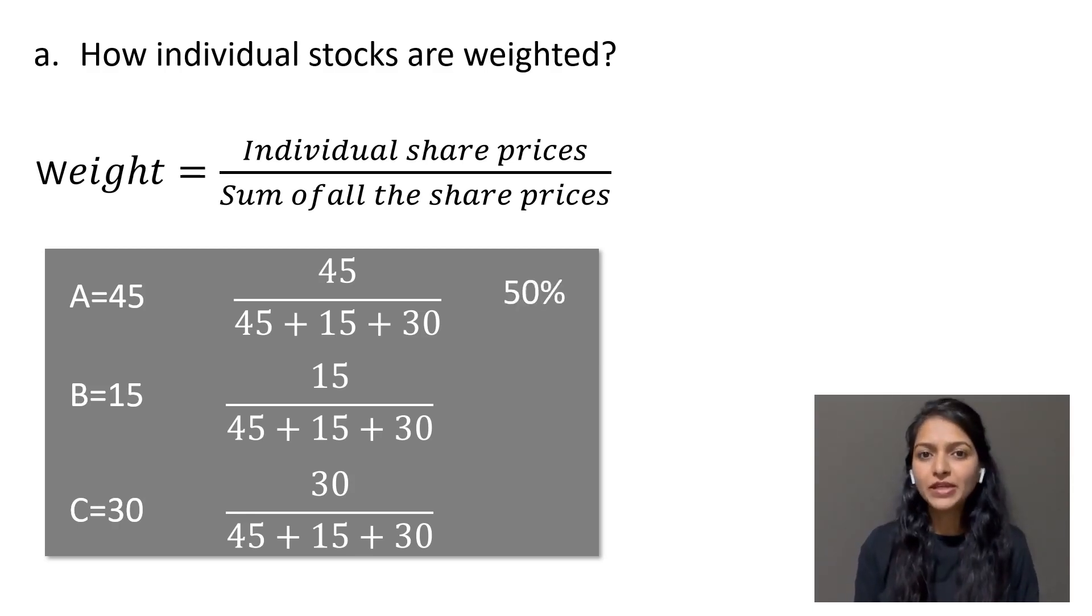Stock A weighs 50%, B weighs 16.7%, and C weighs around 33.3%. Clearly stock A has the highest weight in the index.